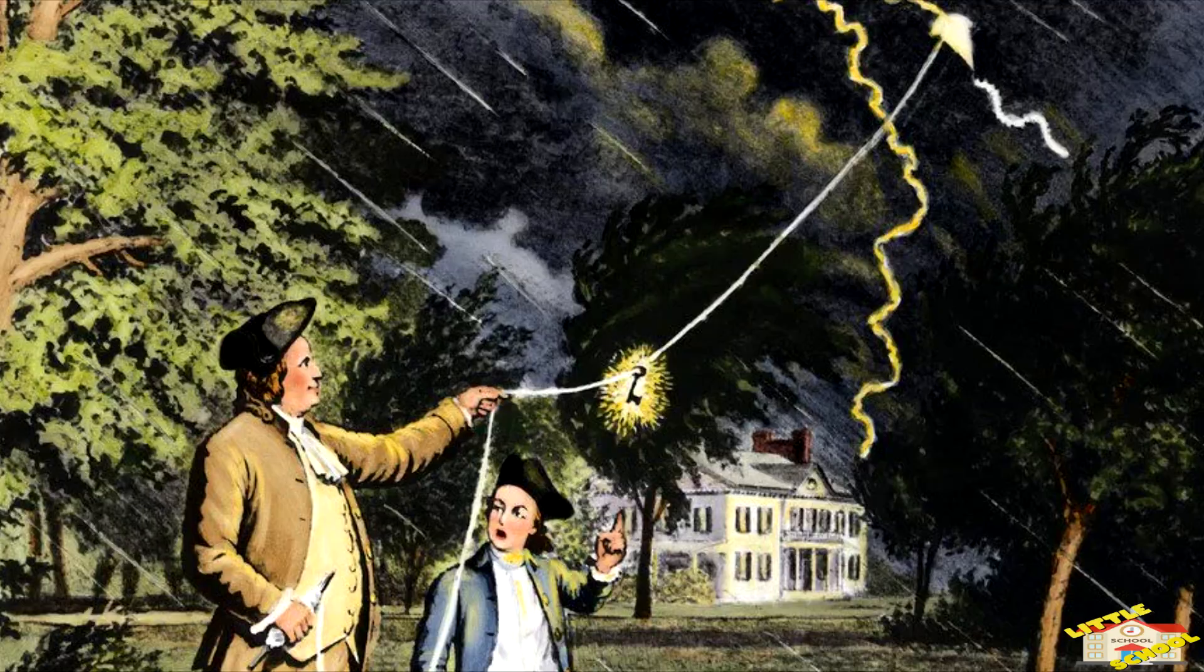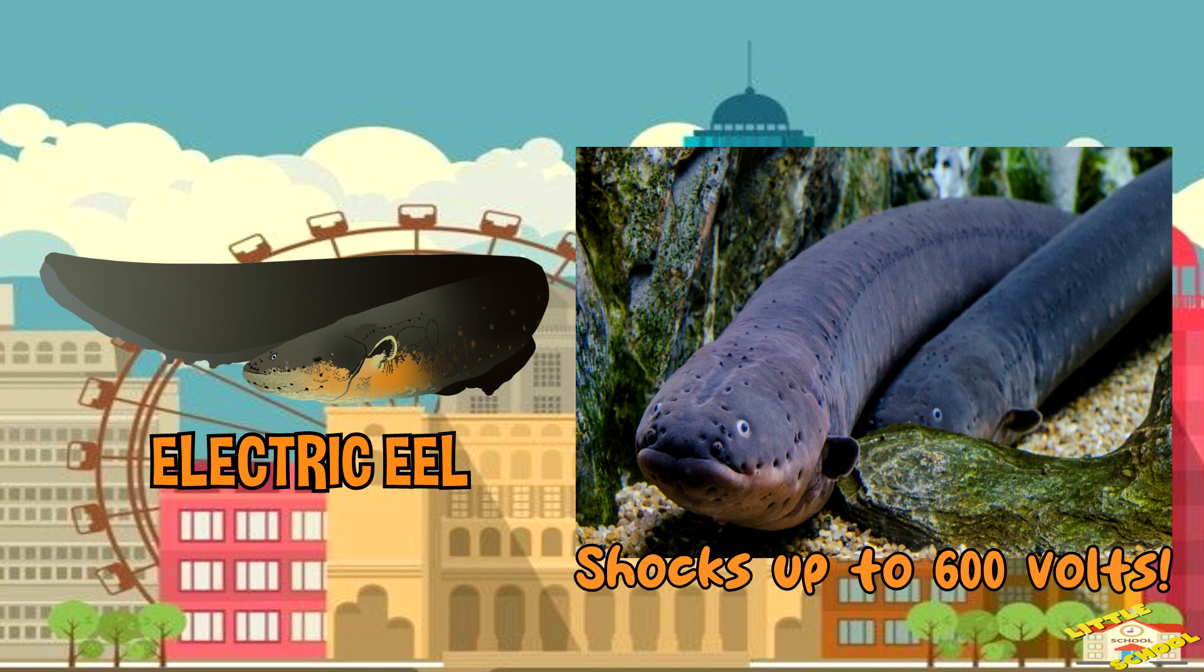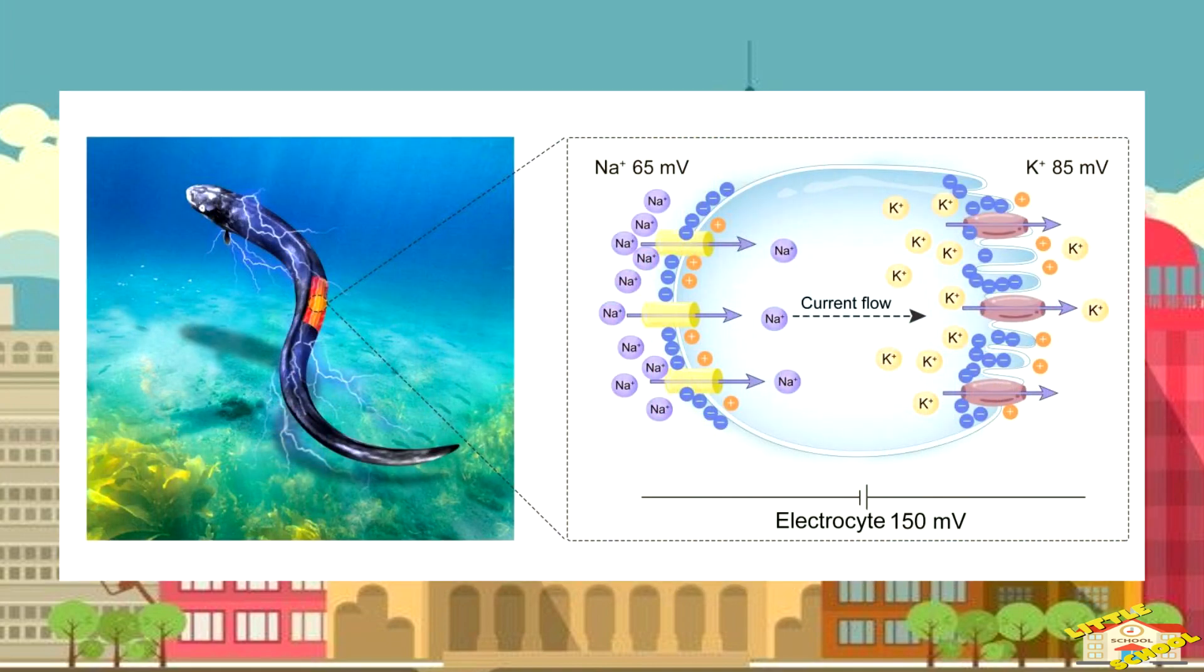Electric eels can generate electric shocks of up to 600 volts to stun prey and deter predators. They use specialized cells called electrocytes to produce these shocks.